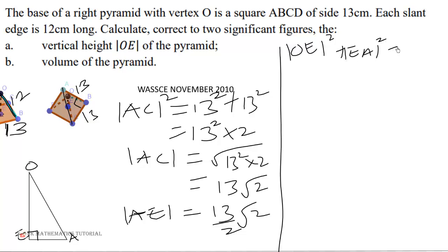OA is 12, and EA is 13 over 2 √2. So OE squared plus (13 over 2 √2) squared equals 12 squared.